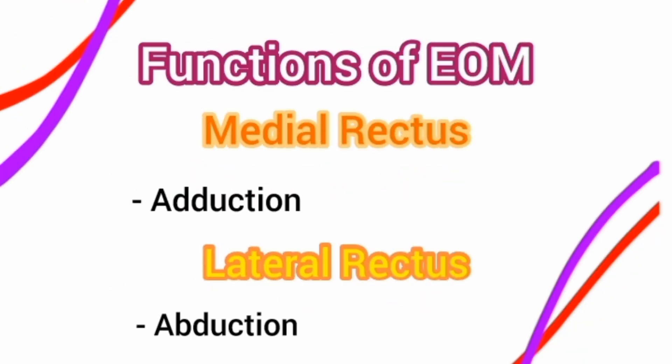The medial rectus helps the eye move towards the nose — this movement is called adduction. The movement away from the nose is abduction, so the lateral rectus helps in abduction while the medial rectus helps in adduction. These two muscles each have only a single function.